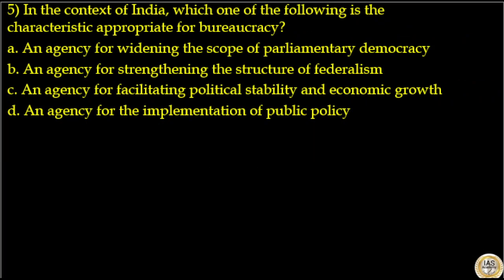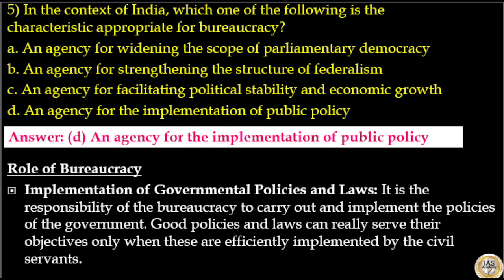In the context of India, which one of the following is the characteristic most appropriate for bureaucracy? Options are: an agency for widening the scope of parliamentary democracy; an agency for strengthening the structure of federalism; an agency for facilitating political stability and economic growth; an agency for implementation of public policy. The answer to this question is option D — an agency for implementation of public policy.